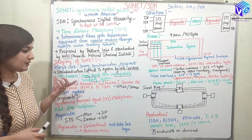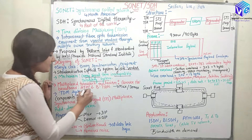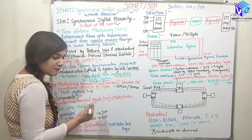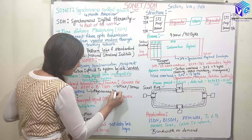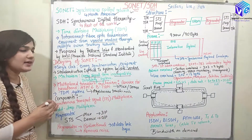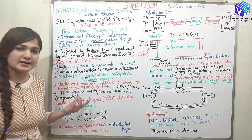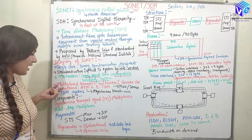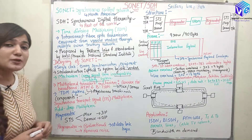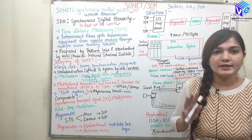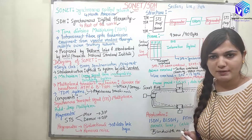SONET and SDH are used in ATM (Asynchronous Transfer Mode) and BISDN systems, as well as in ISDN networks and TDN systems. Coming to the various components: we require multiplexing and demultiplexing of signals, so MUX and DMUX are required.